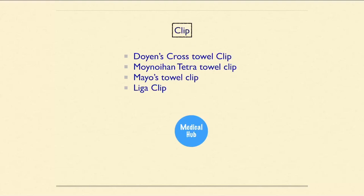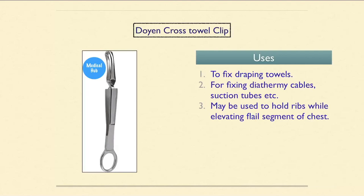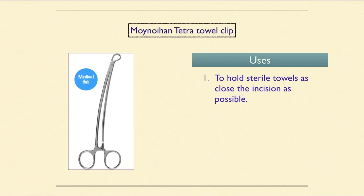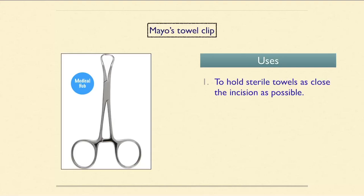Now we discuss clips. The Doyen's cross towel clip is used for draping towels, fixing diathermic cables, suction tubes, etc., and may also be used to hold ribs while elevating a flail segment of the chest. The minor hand tetra towel clip and the Marsh towel clip are both used to hold sterile towels as close to the incision as possible.